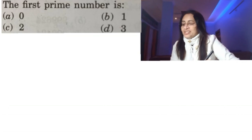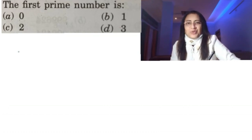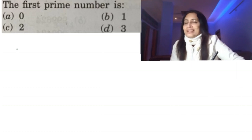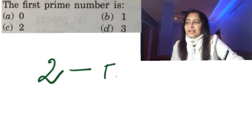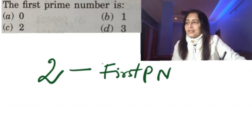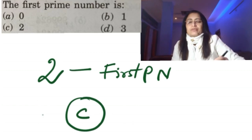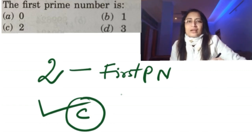Again on prime numbers: what is the first prime number? The smallest prime number and the first prime number are both the same. The smallest prime number is 2, and this is also called the first prime number. It is also the only even prime number. So our answer is option C — smallest prime number is 2.